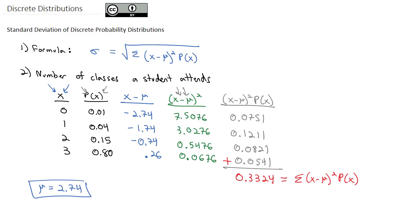For our final answer, though, the formula states that σ, the standard deviation, is the square root of that sum, the square root of 0.3324, so our final standard deviation is 0.5765.